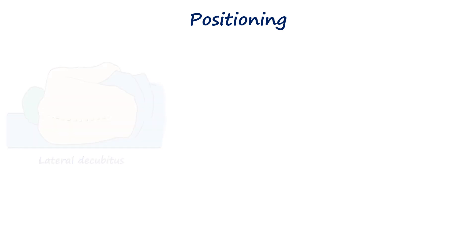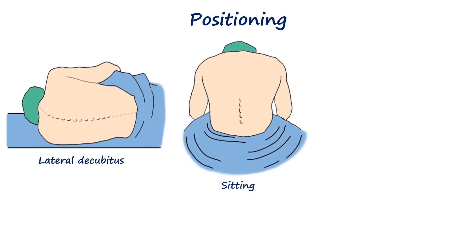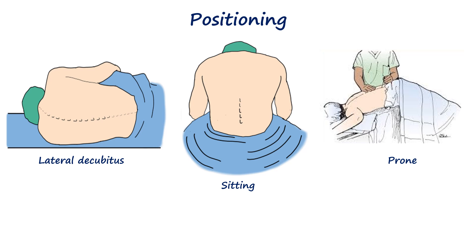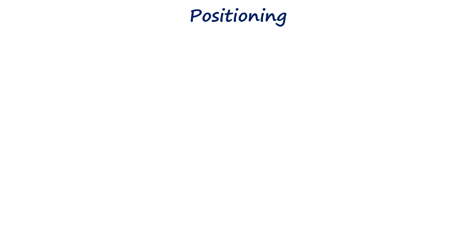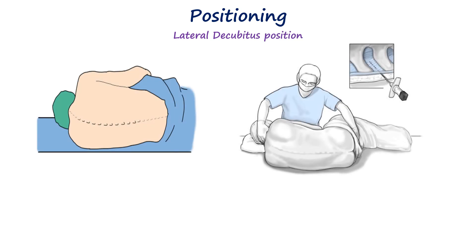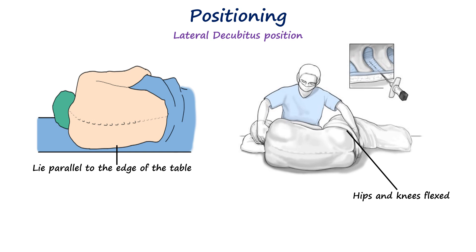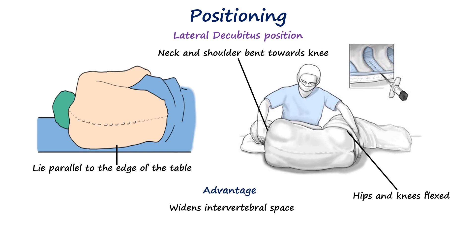The most common positions for spinal anesthesia are the sitting and lateral flexed positions, though the prone position can also be used in selected cases. The lateral position is most commonly used for routine spinal anesthesia. The patient lies on the side with the back parallel to the edge of the table, hips and knees flexed, and the neck and shoulders bent toward the knees. This flexion widens the intervertebral spaces, making needle insertion easier and more accurate. It is comfortable for most patients and preferred in those under sedation or at risk of hypotension.